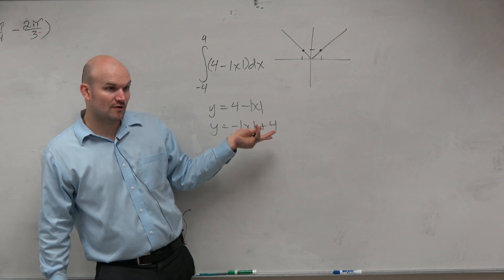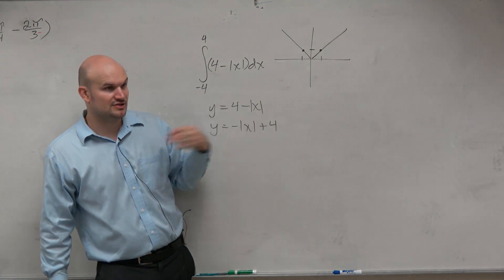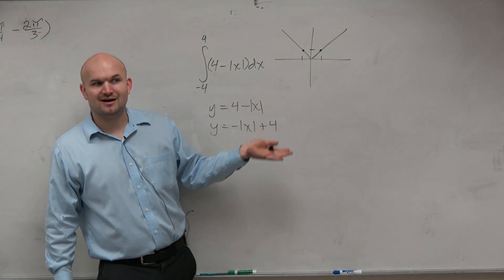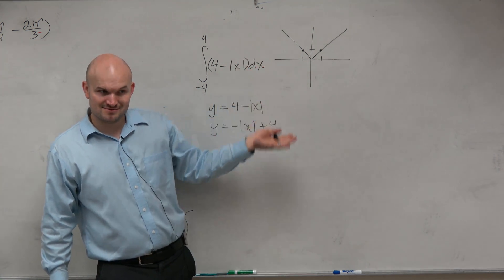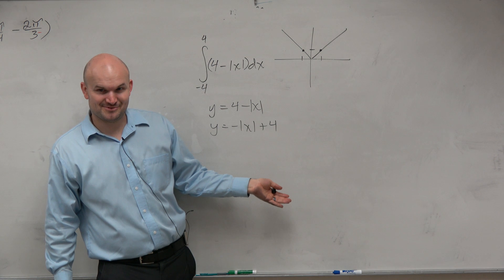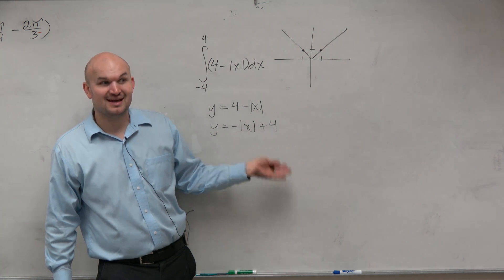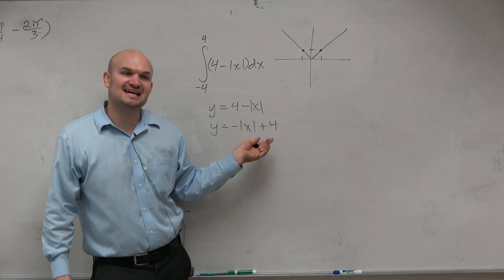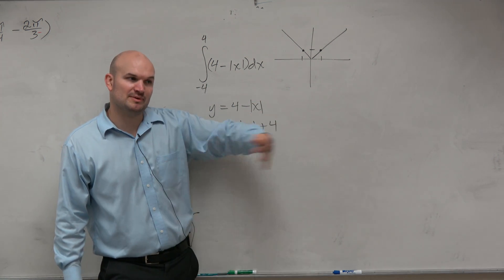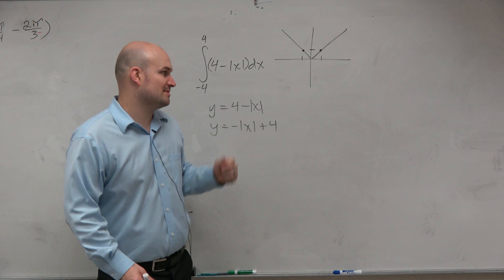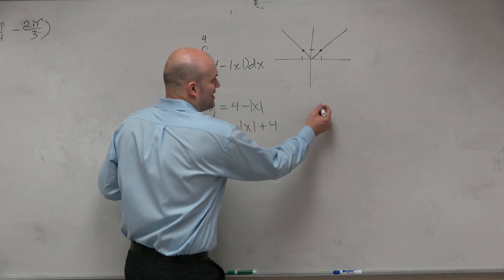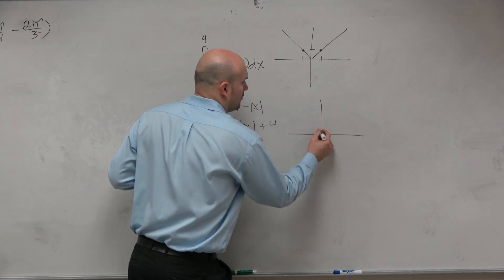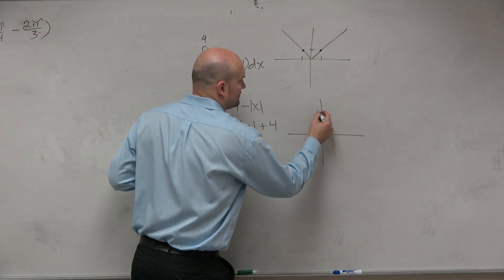And then the plus 4 — is that shifting left to right, or up or down? It's actually going up 4. If it was inside the function, that would be your horizontal transformation. So the graph just looks like this, with the vertex at 1, 2, 3, 4.